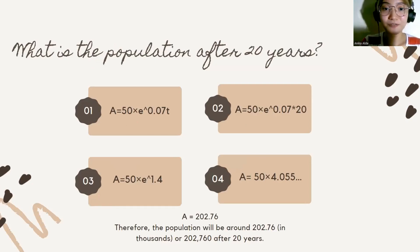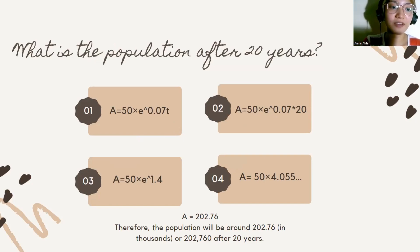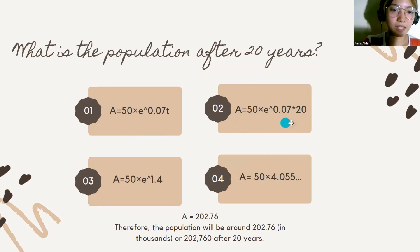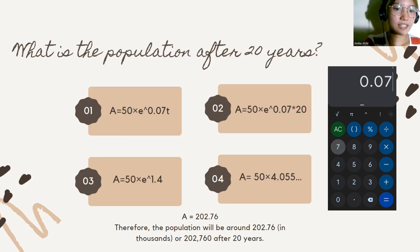The first problem asks for the population after 20 years. So the time here is t equals 20. Using the formula: A equals 50 times E raised to 0.07 times t, we substitute t equals 20. First, we compute 0.07 times 20, which equals 1.4.